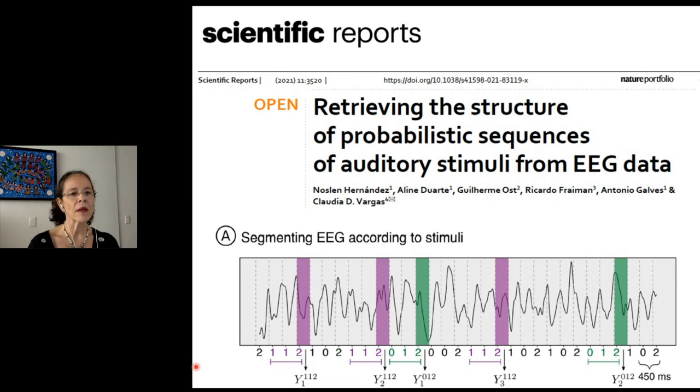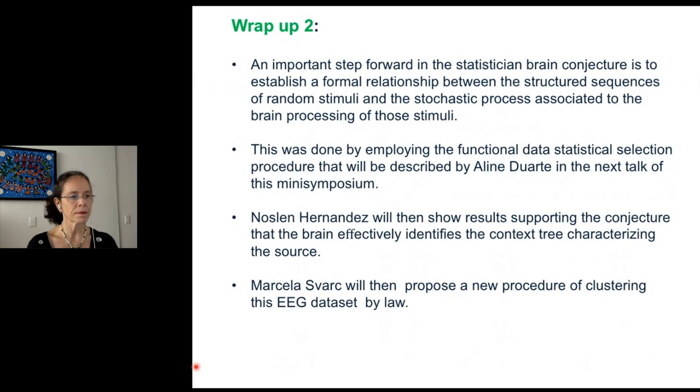So to wrap up at this point, I would like to state that an important step forward in the statistician brain conjecture is to establish a formal relationship between the structured sequence of random stimuli and the stochastic process associated to the brain processing of those stimuli.